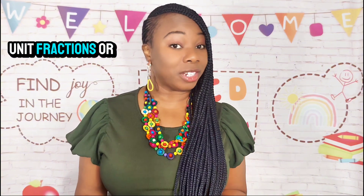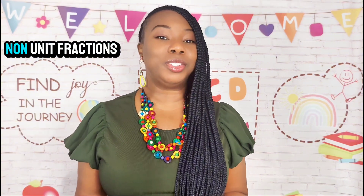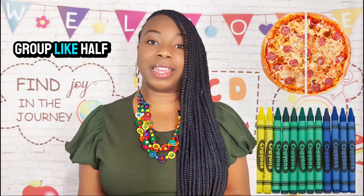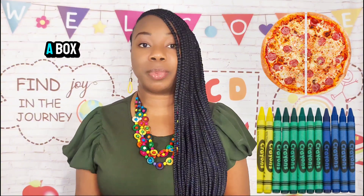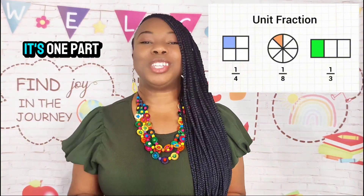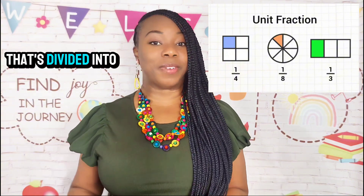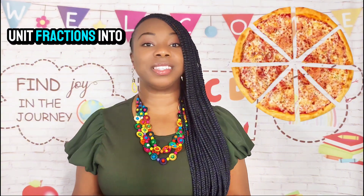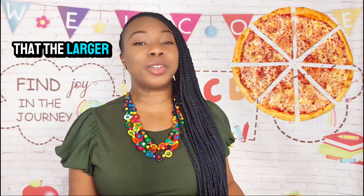Sometimes we have unit fractions or non-unit fractions, because a fraction can be a part of one thing like half a pizza, or a part of a group like half the crayons in a box. A unit fraction has one at its numerator — it's one part of a whole that's divided into equal parts. Let's divide our pizza into different unit fractions, into eighths. Can you see that the larger the denominator, the smaller the slice is?